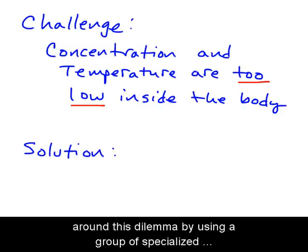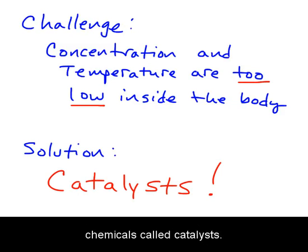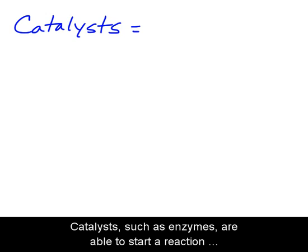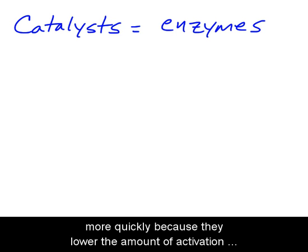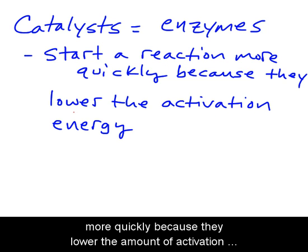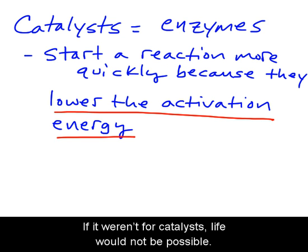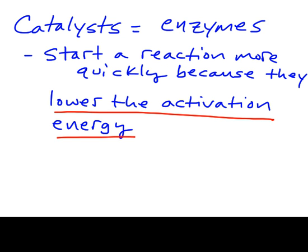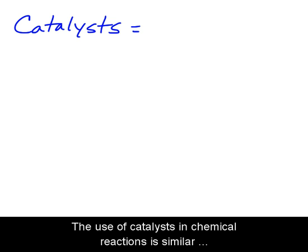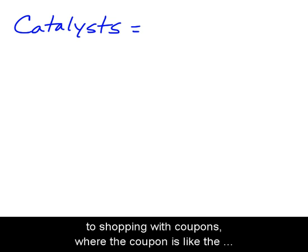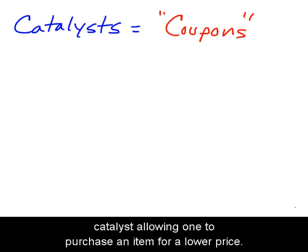Fortunately for our continued survival, the body has a way around this dilemma by using a group of specialized chemicals called catalysts. Catalysts such as enzymes are able to start a reaction more quickly because they lower the amount of activation energy needed for the reaction to take place. If it weren't for catalysts, life would not be possible. The use of catalysts in chemical reactions is similar to shopping with coupons, where the coupon acts like the catalyst, allowing one to purchase an item for a lower price.